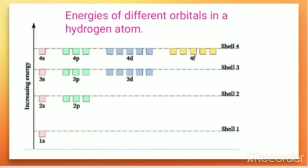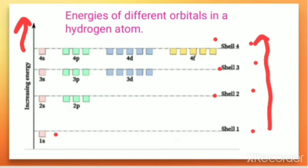When you observe the energy level diagram, you can see that energy is increasing in the direction of the arrow. You can find the energies of various orbitals in a hydrogen atom: the first orbital, 1s, has the lowest energy, then the second shell, third shell, fourth shell. So lowest energy is for the first shell, then second, third, then fourth.